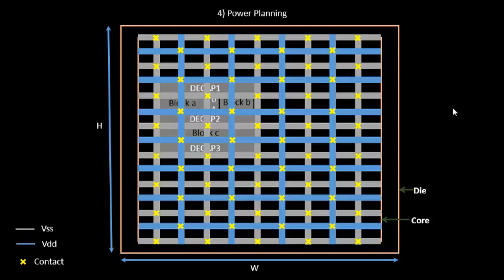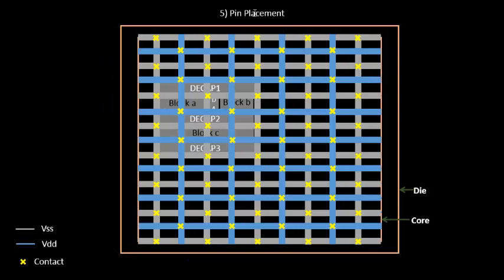We have discussed all of these in a separate section — you may want to look at the crosstalk videos. Since we're running out of time, the next step is pin placement, which is a very simple step. Once we do the pin placement and the logical cell placement blockage, we are ready with our floor plan. We'll look into these two steps in the next video.